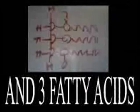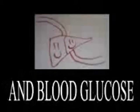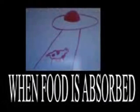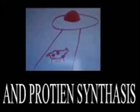Triglyceride is glycerol and three fatty acids. This lipid helps bi-directional transfer between adipose tissue and blood glucose in or from the liver. When food is absorbed, the pancreas stimulates amino acid absorption and protein synthesis.